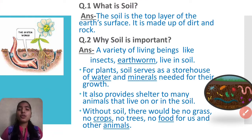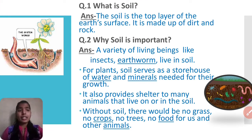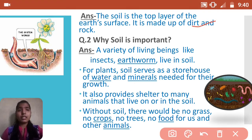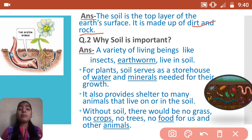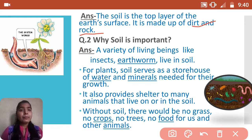First of all, what is soil? Soil is the top layer of the earth's surface. It is made up of dirt and rock - the topmost layer that you can see around you, we call it soil.